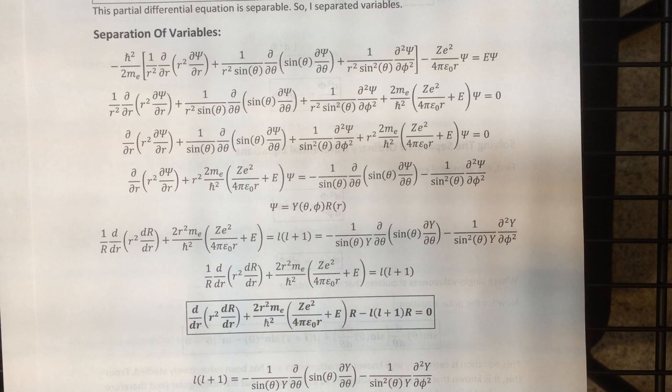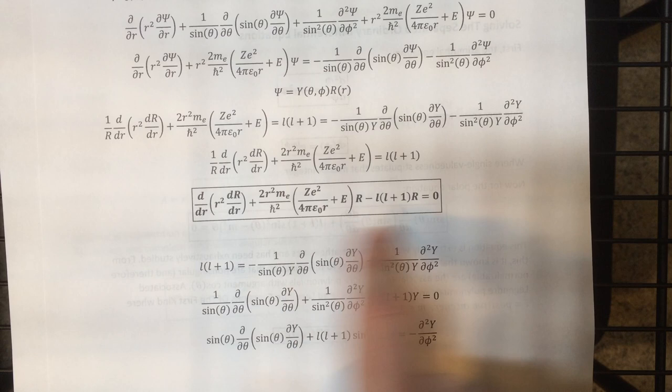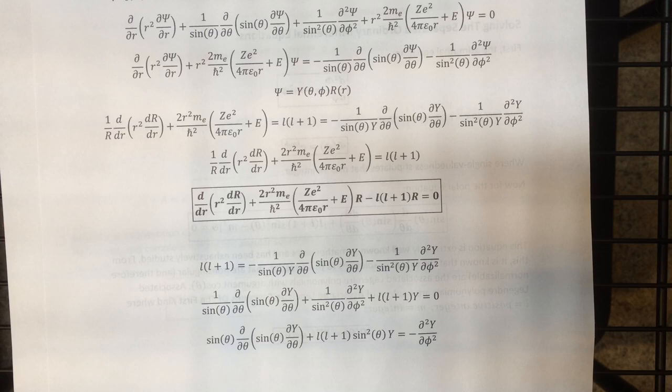This is a single-variable ordinary differential equation for the radius — saying single-variable and ordinary differential equation is redundant, but anyway — and this is the two-variable partial differential equation representing the angular part.